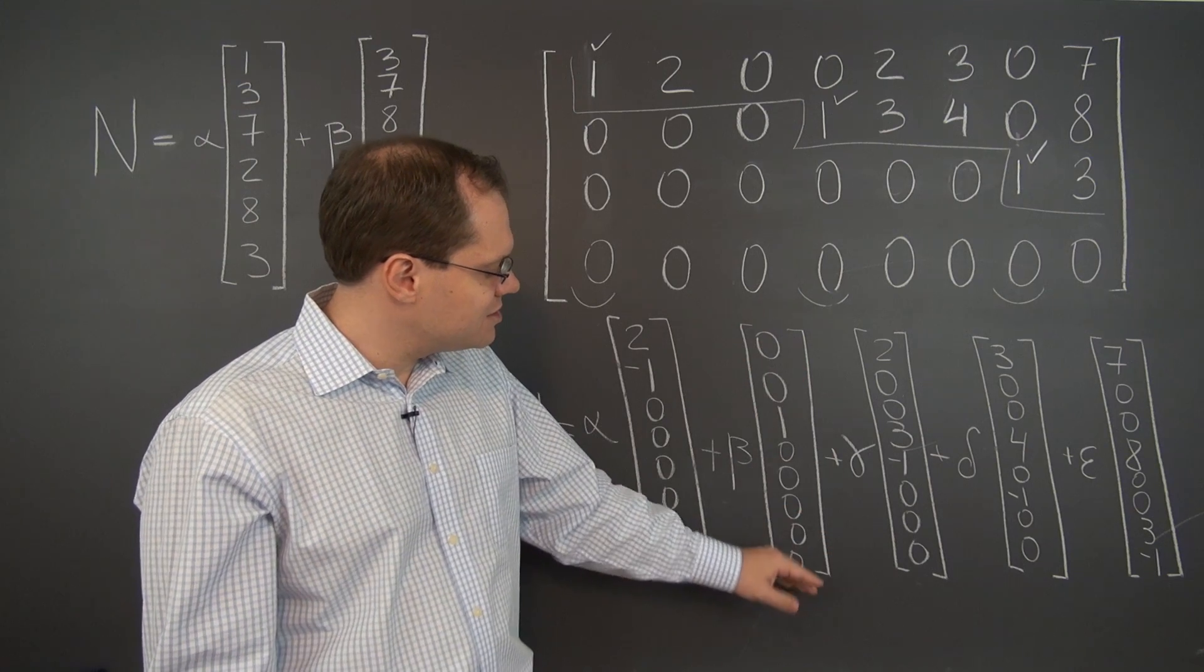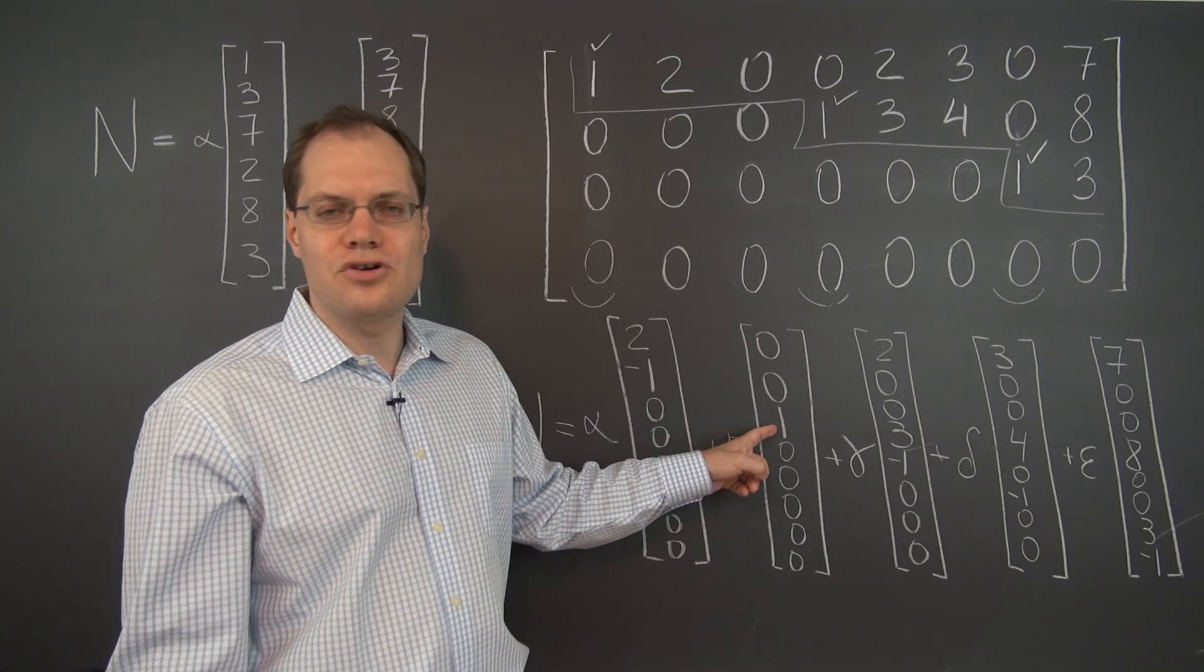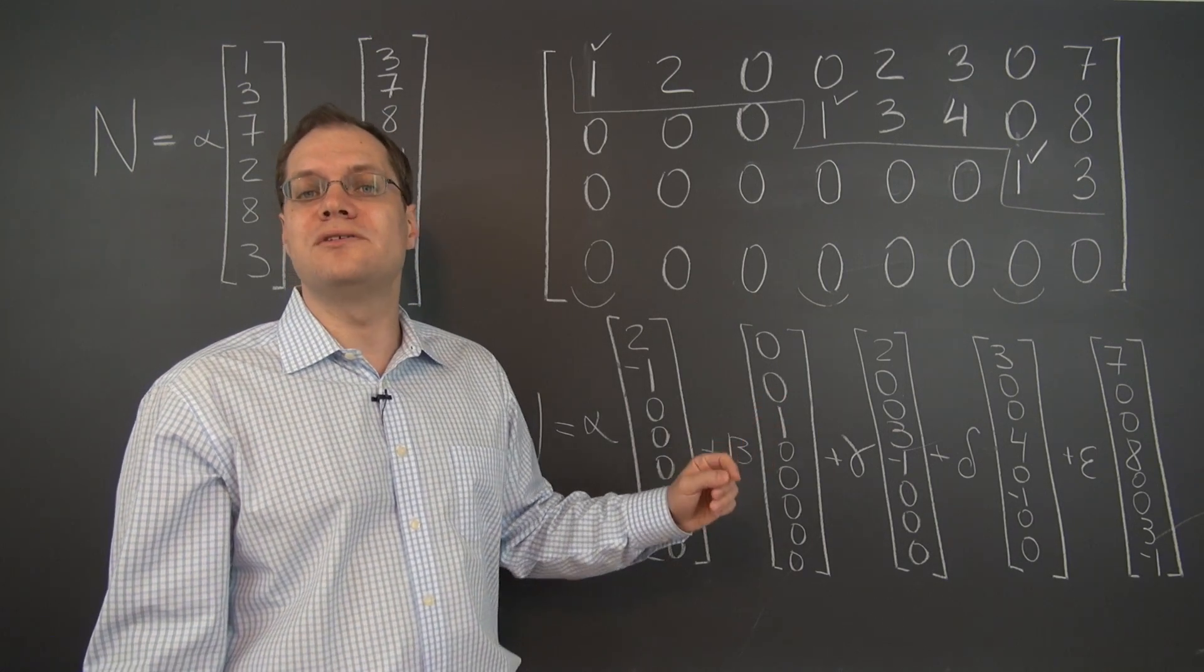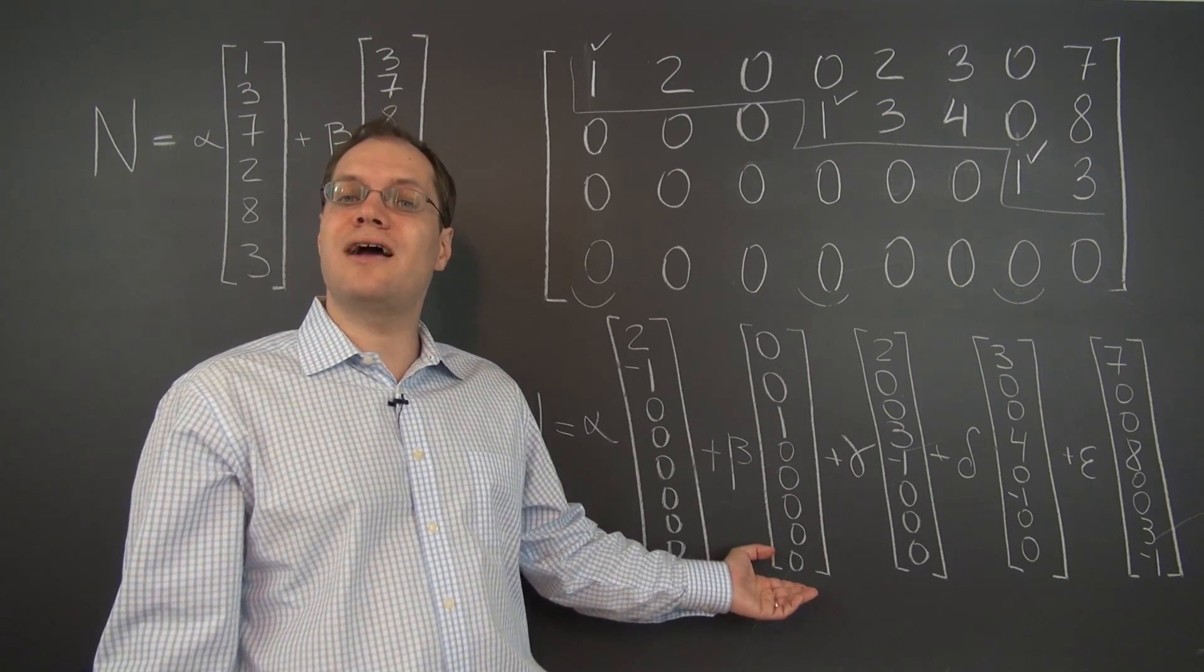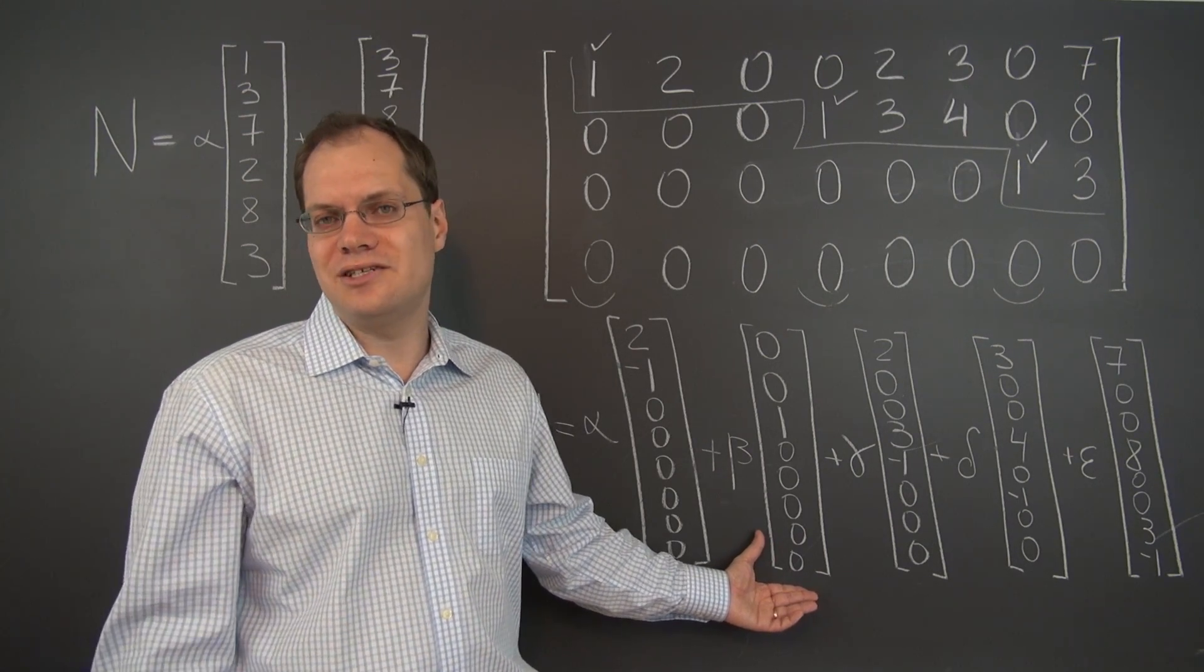Because this vector is telling us that 0 of the first column plus 0 of the second, forget all the zeros, plus the third column equals 0. So you can extract very valuable information from this element: the third column is 0.